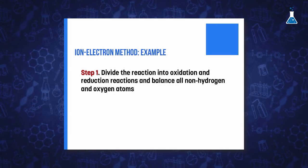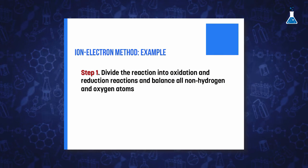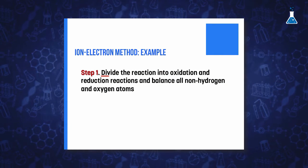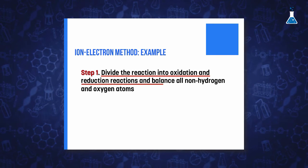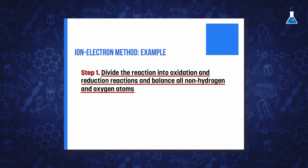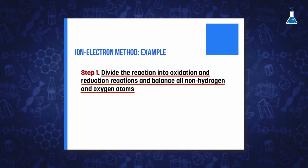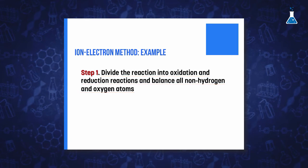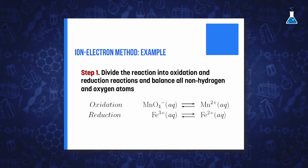Then, we apply the method which consists of applying a set of rules. Firstly, we represent both processes, oxidation and reduction, by splitting the whole reaction into half-reactions. And in each half-reaction, we balance all non-hydrogen and non-oxygen atoms. In our example, it's pretty simple.